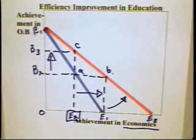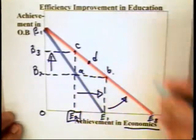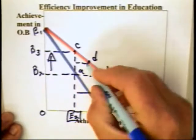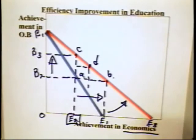The moral of the story is that when there is an efficiency improvement in one area — for example, the classroom in economics — that efficiency improvement can show up in other areas. Or for that matter, the efficiency improvement can show up in both areas because the individual could move to a point like D, in which case the individual learns more economics and more organizational behavior.